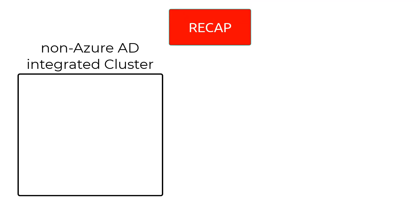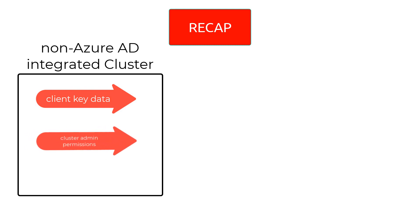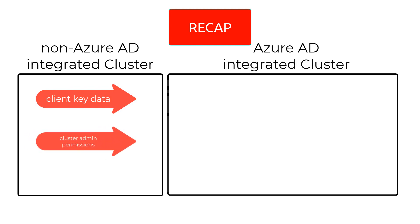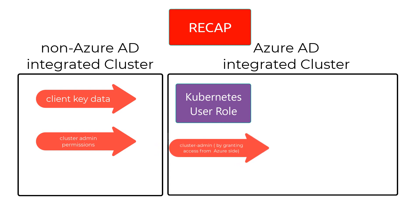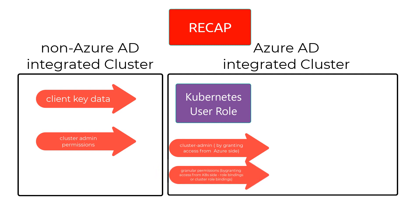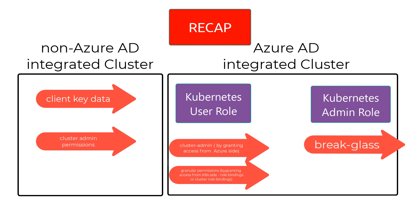To recap: for a non-Azure AD integrated cluster, every kubeconfig file contains the client key data and the permissions are cluster admin by default. For an Azure AD integrated cluster, if you grant the Kubernetes user role on the Azure side, you can either make the group cluster admin via the Azure portal, or grant fine-grained permissions on the cluster side by logging in and creating role bindings or cluster role bindings. Use the Azure AD admin role as a break-glass account to fetch the admin certificate only when necessary.